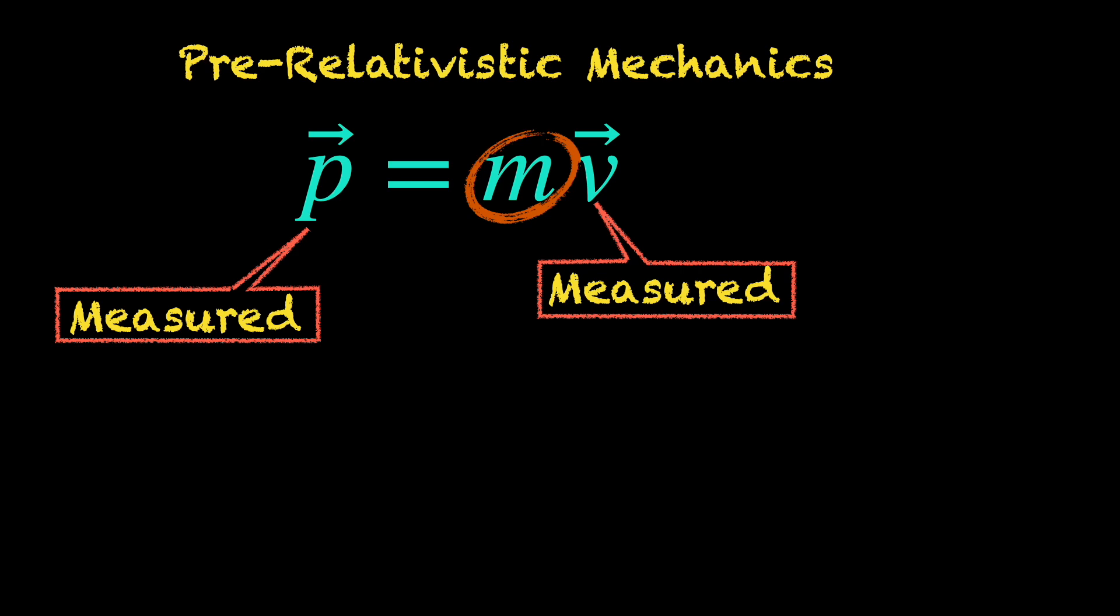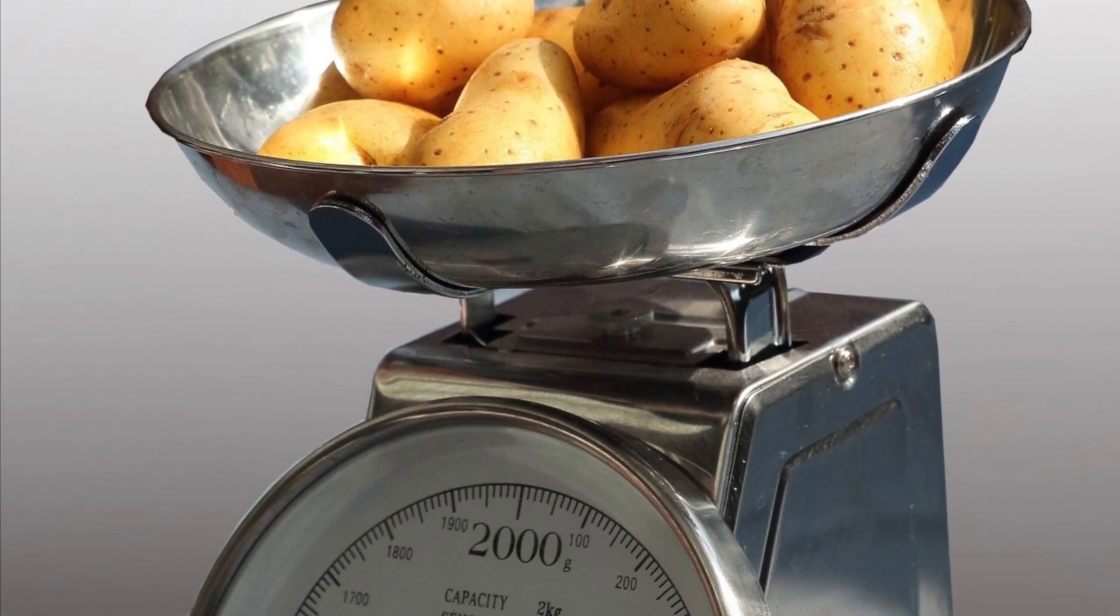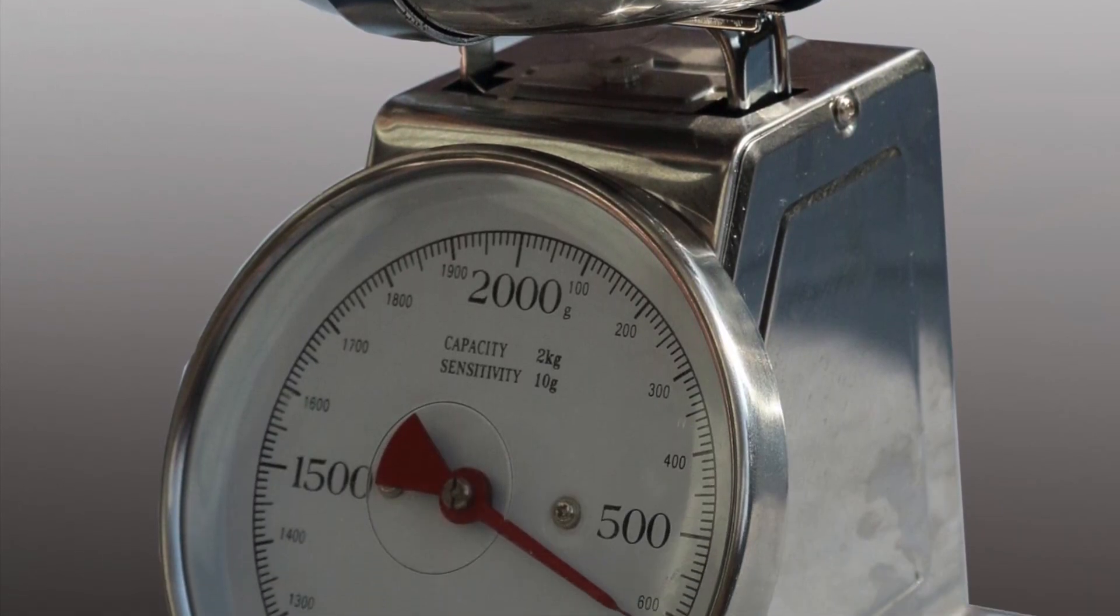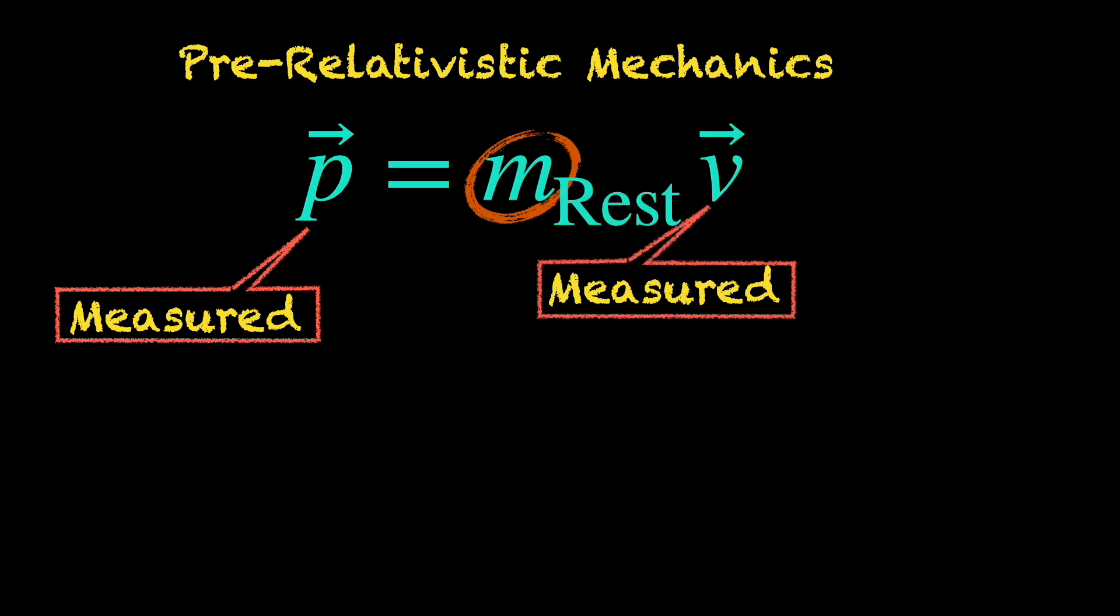So from the measured value of P and V vector, he can calculate the mass of the moving object. Which mass is this? Is it the rest mass or the new relativistic mass? Remember the 1 kilo of potato? Yeah, that mass, the plain vanilla ordinary mass, which is the same as the rest mass as we have just discussed.